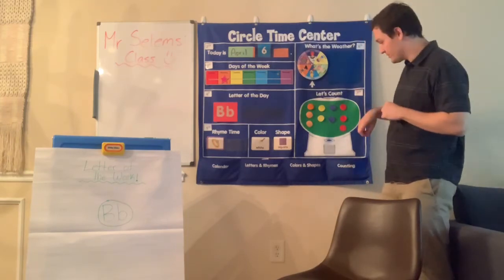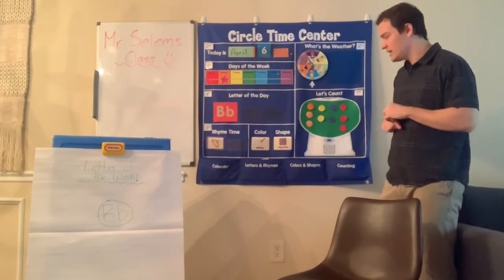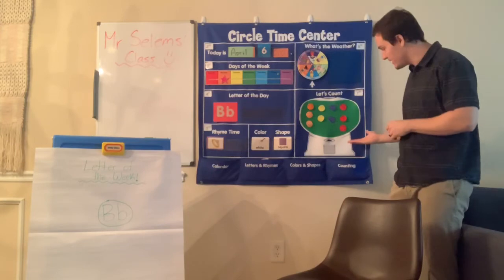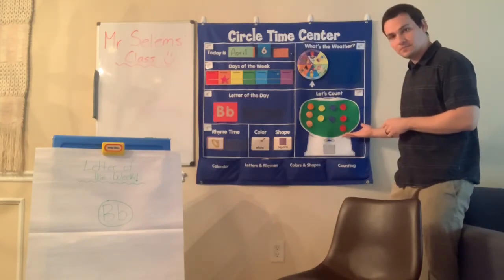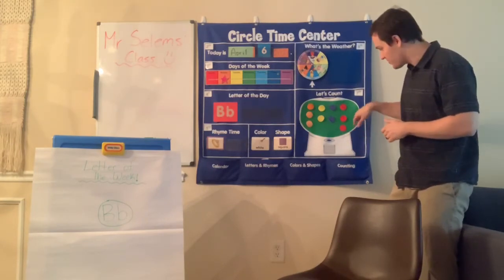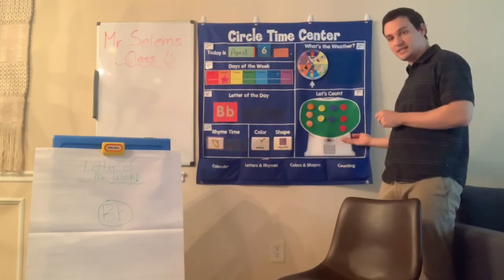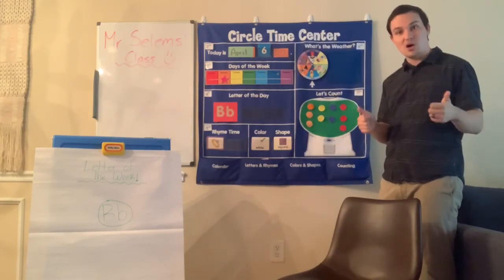And how about blue gumballs? Also two, you're right. One, two. And finally, that just leaves the red gumballs. So how many red gumballs do I have? Perfect. Three. One, two, and three. So that's all ten of our gumballs. Awesome job.